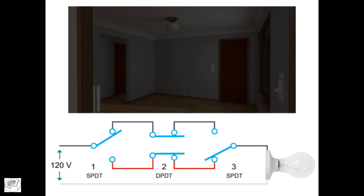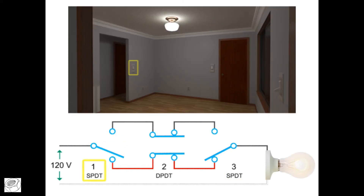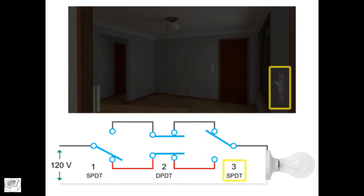Placing switch one in the down position and switch three in the up position also results in a broken circuit, and current is unable to flow freely to the light bulb.